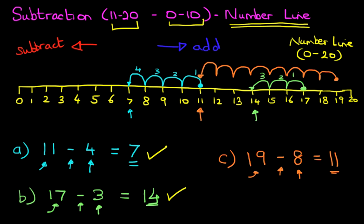That is the answer. 19 minus 8 equals 11. So that is subtraction of numbers using the number line.